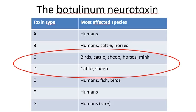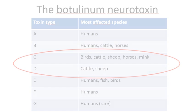Botulism affects both humans and animals, but most cases of animal botulism are due to type C and D, whereas humans are mainly affected by type A, B, E and F.